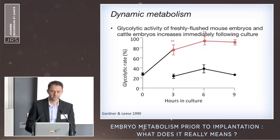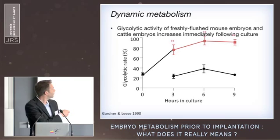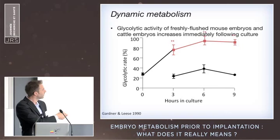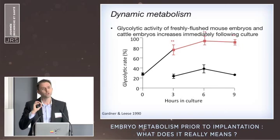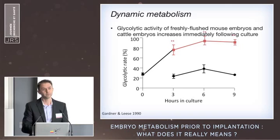25 years ago, David Gardner demonstrated this most elegantly: he took mouse embryos in vivo, flushed them from the oviduct, and within three hours of being in culture their glycolytic rate had increased from around 20% to over 70%. Changes in metabolism are incredibly sensitive to the environment in which the embryo is kept, and our data is starting to identify that metabolism changes the physiology of the embryo.